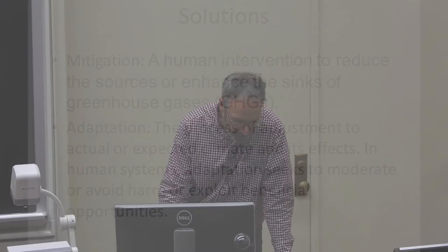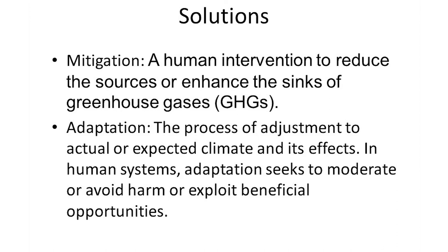There are two solutions: we can mitigate — human intervention to reduce sources or enhance the sinks of greenhouse gases — or we can adapt. We're going to have to do both. We know that climate is going to change, probably more than two degrees, so we're going to have to adapt to a warmer climate. The adaptation process involves adjustment to actual or expected climate change and its effects. We'll have to mitigate and adapt in the face of large uncertainty. The Anthropocene is the geologic era of significant impact on Earth's ecosystems — there's pollution, climate change, ozone, acid rain, deforestation, etc. Climate change is only one of many environmental impacts.